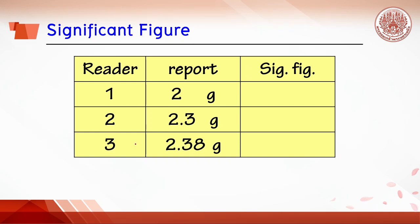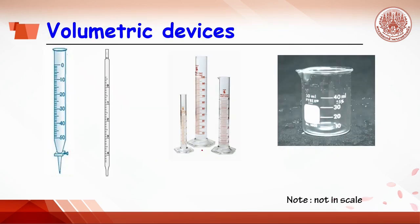From this table, it can be said that the readers record different significant figures of 1, 2, and 3, where the numbers 2, 3, and 8 are the uncertain digits. When volumetric devices such as burette, pipette, cylinder, and beaker are used, how do you report data with significant figures?